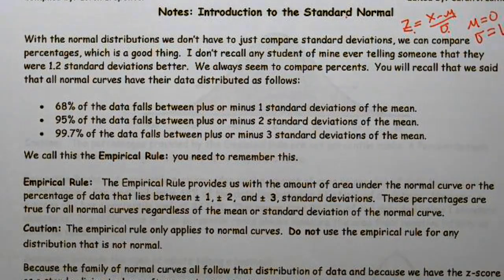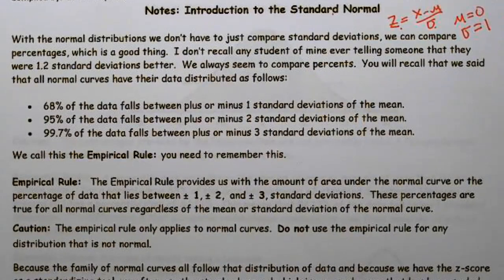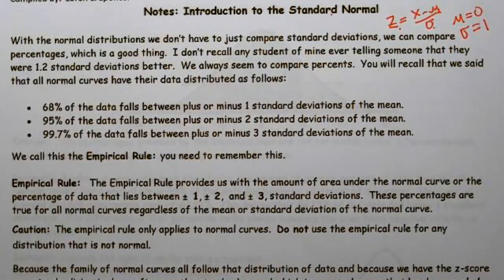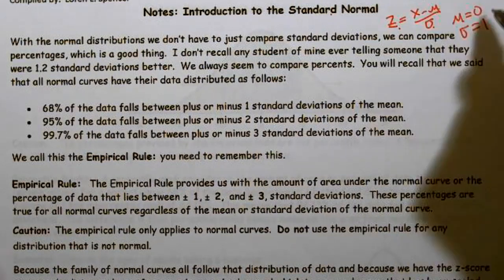For a z-score, or standardized score, the mean is always zero and the standard deviation is always one. So if someone says they scored 1.2 standard deviations above the mean, or their SAT score is two standard deviations above the mean, those are z-scores — not the raw SAT values. For a z-score: mean equals zero, standard deviation equals one. That's always the case — make a big star and don't forget it, because it sometimes trips people up.